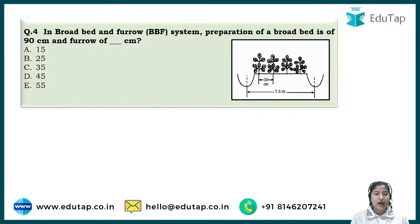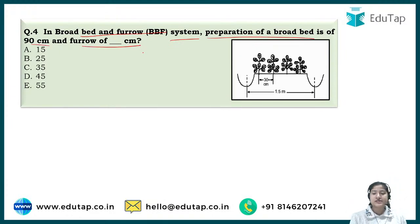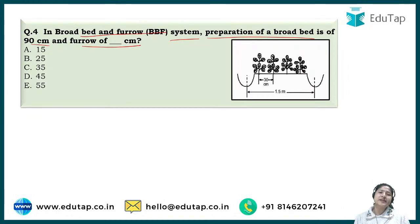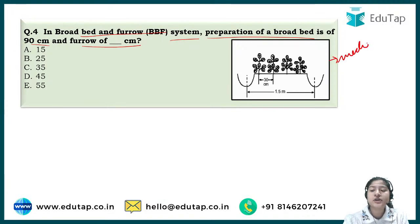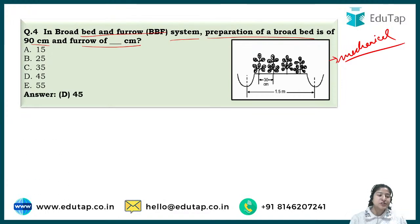Question number four: In the broad bed and furrow system, the preparation of the broad bed is 90 centimeters. What is the depth of the furrow? This is a technical or mechanical/engineering method of soil and water conservation, unlike the agronomic methods we covered earlier. The correct answer is option D — that is, 45 centimeters.